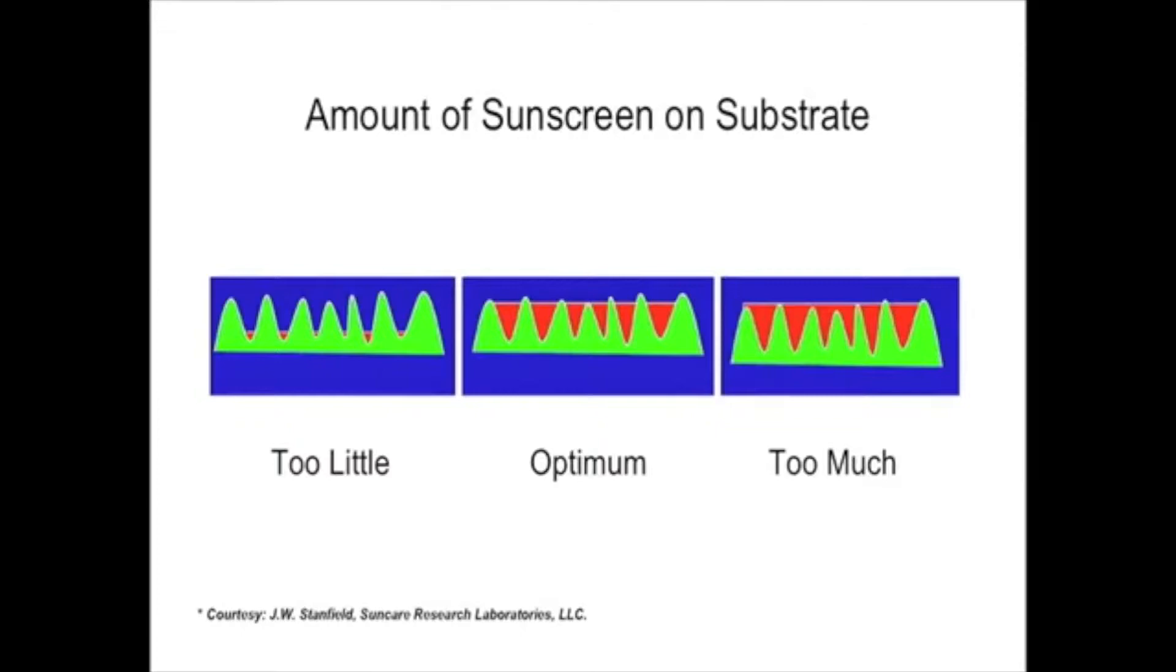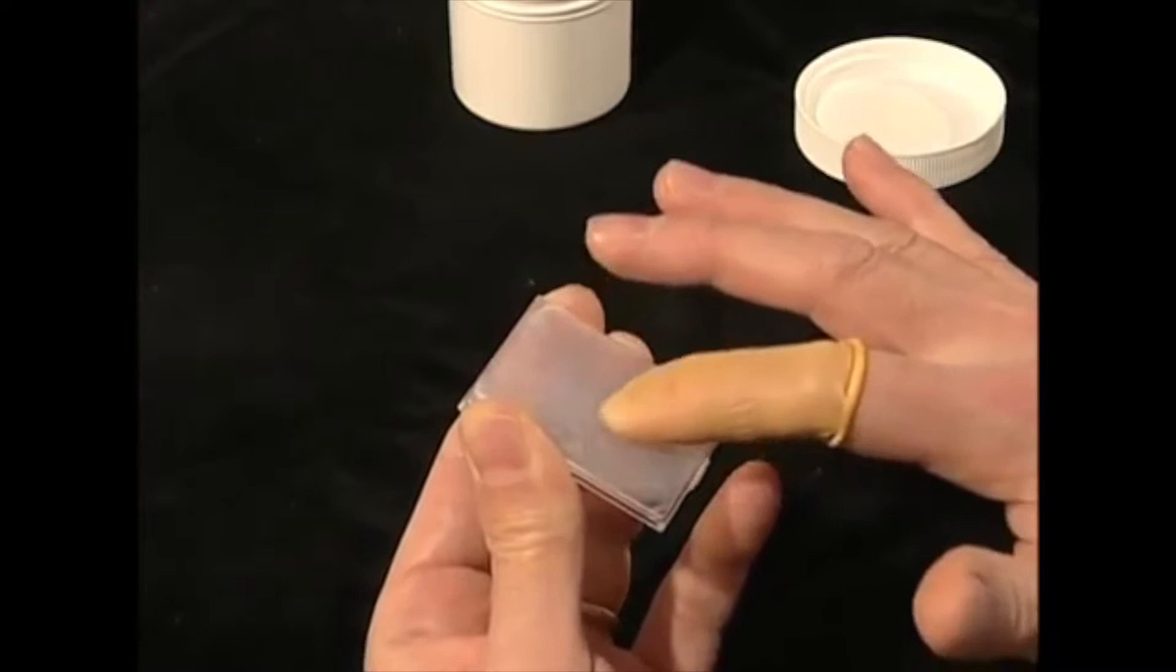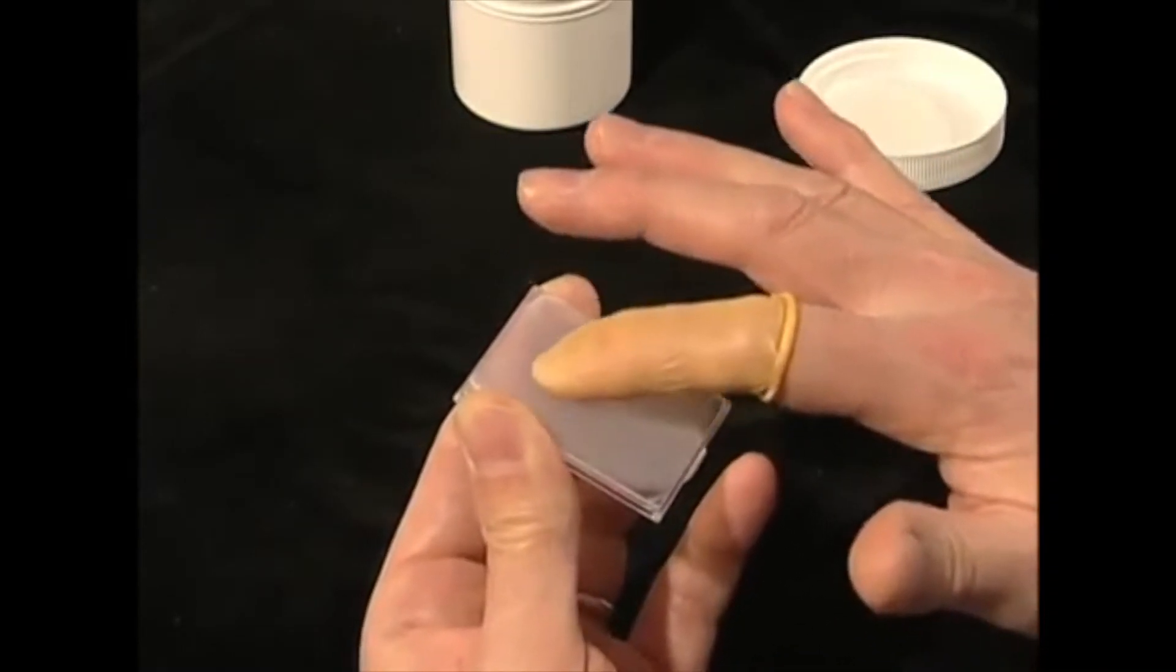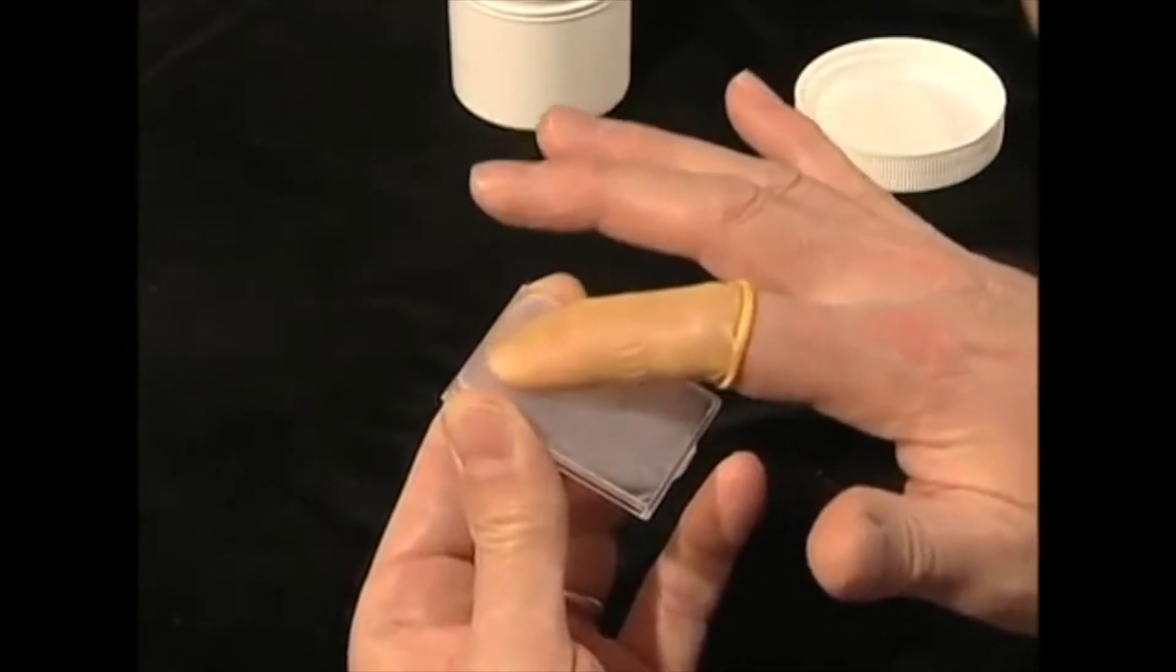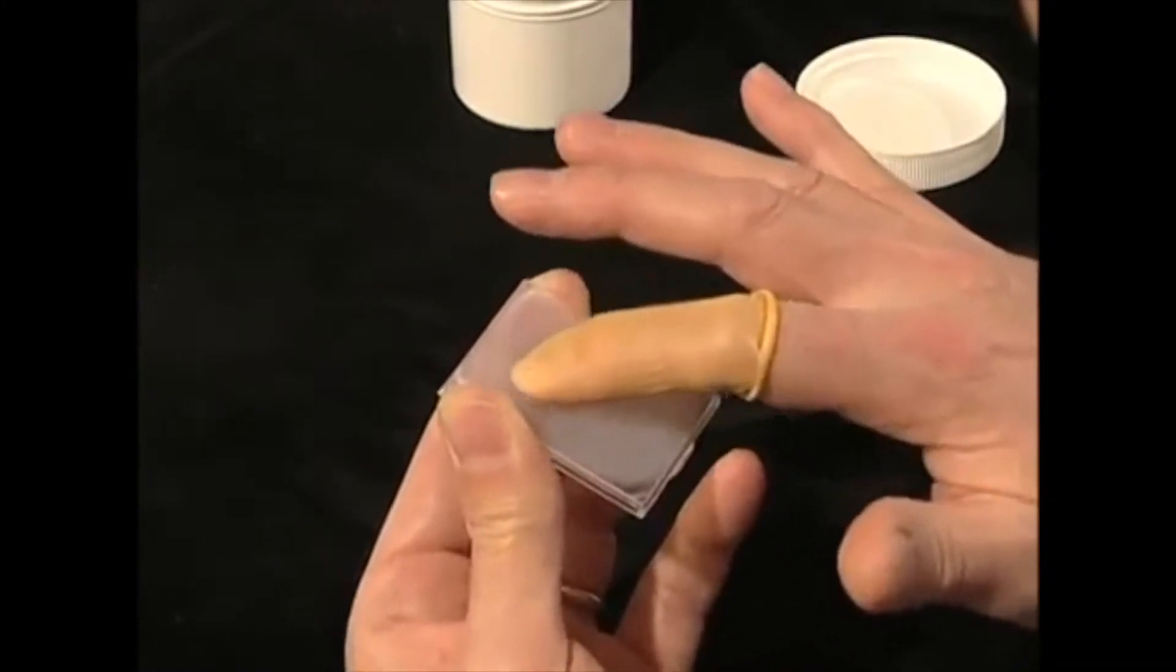The sample amount and spreading technique should be such that an optimum film thickness is achieved on the substrate surface. The optimum film thickness is not only important for accurate SPF measurements but is also critical in achieving accurate measurement results with Kalipa, Bootstar, and FDA methods.